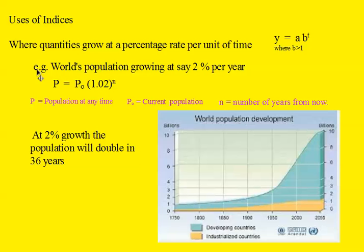In the example, the world's population growing at, say, 2% per year, we can find the population at any time if we know the current population with this formula. The population at any time is the current population times 1.02, that's the base, to the power of, or index, N, where N is the number of years from now.